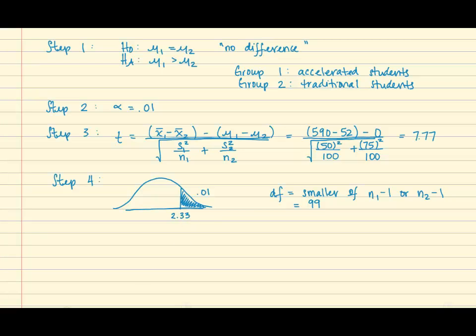Our test statistic of 7.77 falls in the rejection region. It is way out here. And so we are able to reject the null hypothesis.